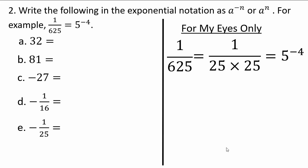Pause the video here and attempt all the ones you see on your own. Assuming you've paused: 32 — 2 goes into 32, so 2 times 2 times 2 times 2 times 2 equals 32, that's 2 to the 5th. 81 is 9 times 9, and 9 is 3 times 3, so four 3s give you 81 — but it's negative of 81, so you'll have negative of 3 to the power 4. Because 3 times 3 is 9, times 3 is 27, times 3 is 81.